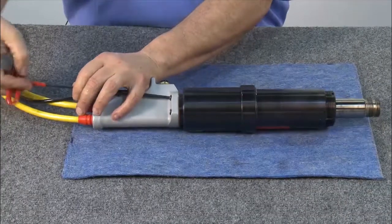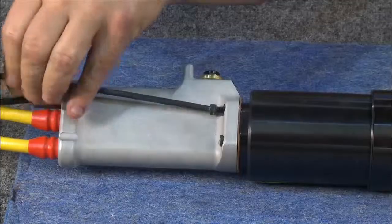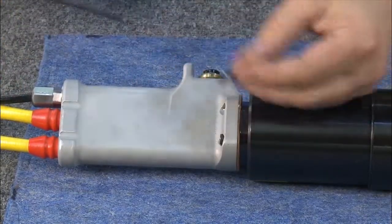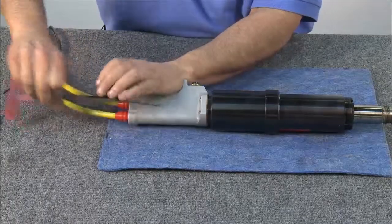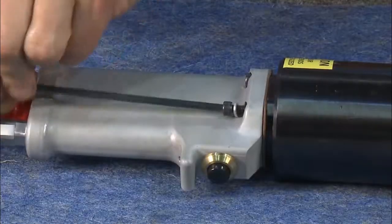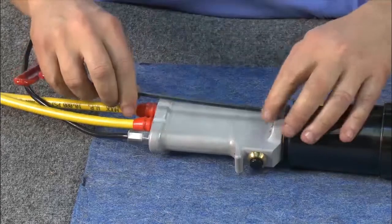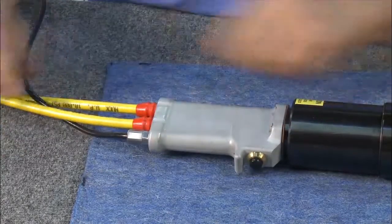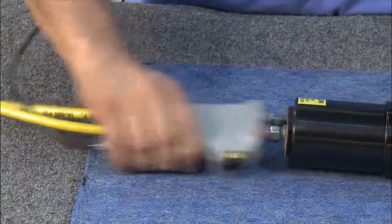To disassemble the tool, begin by removing the handle. The handle has four screws in all that need to be removed. Once the screws have been removed, pull the handle off and slide it back.